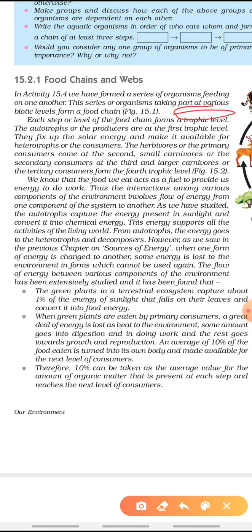Plants make food themselves and come to the first trophic level. They fix solar energy and make it available to heterotrophs or consumers. Plants fix sunlight into chemical energy, so they are the fixers of solar energy providing energy to consumers. Herbivores or primary consumers come at second, small carnivores or secondary consumers at third, and large carnivores or tertiary consumers form the fourth trophic level.